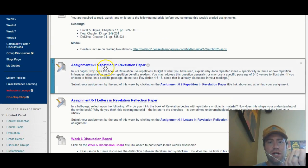Anyway, let's go over the assignments. So this week, 6-2, the repetition in Revelation paper. In two to three pages, why does the book of Revelation use repetition? So there's a lot of repetition in the book. Why? In light of what you've read, explain why John would repeatedly mention the same idea, specifically in terms of how repetition influences interpretation and how repetition benefits readers.